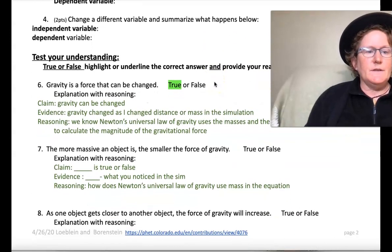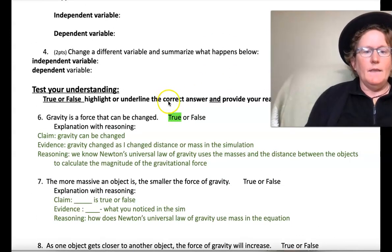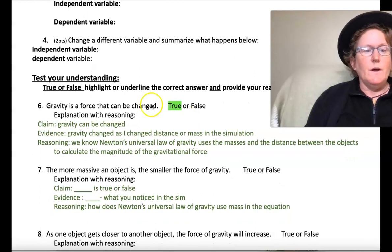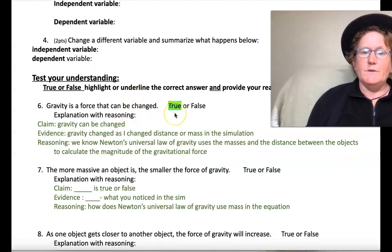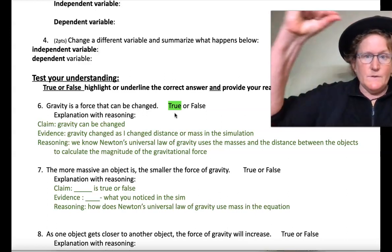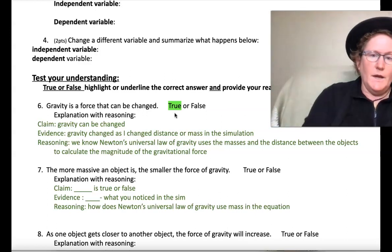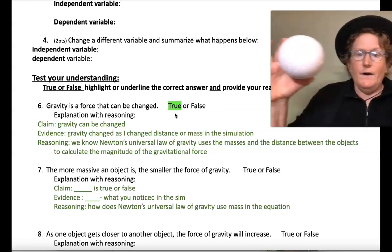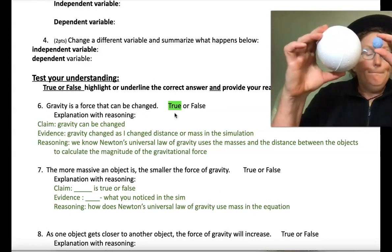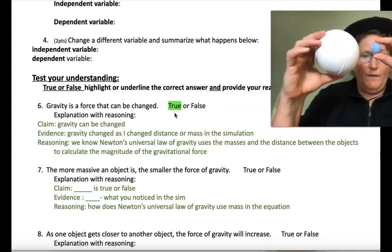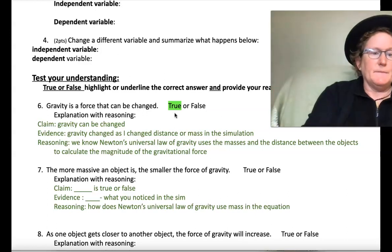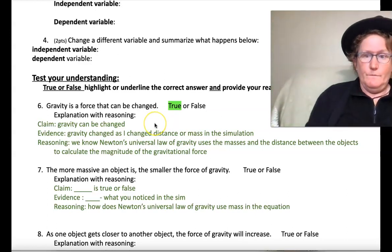So number six here is highlight or underline the correct answer and provide your reasoning. So I'm going to do the first one for you. Gravity is a force that can be changed. That's true. We saw that in the simulation. We saw those arrows at the top of the simulation could be changed depending on how far the masses were or how close they were together and also the size of the mass.